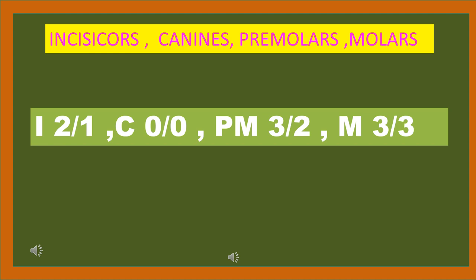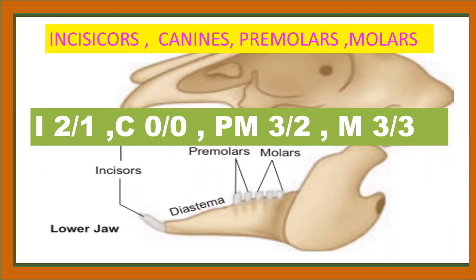In the picture, the front teeth you see are the incisors, followed by a gap. The next are the premolars and finally the molars. The gap between the incisor and the premolar is called diastema, which helps in the mastication and chewing of food in herbivorous mammals.